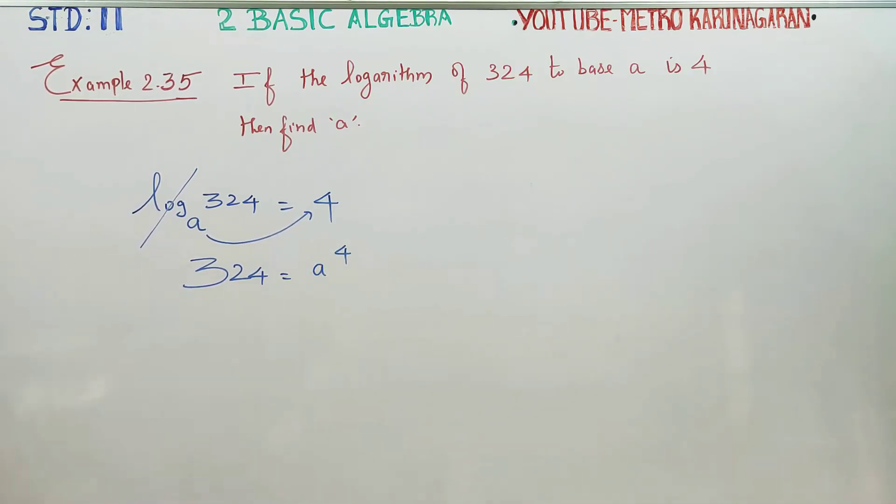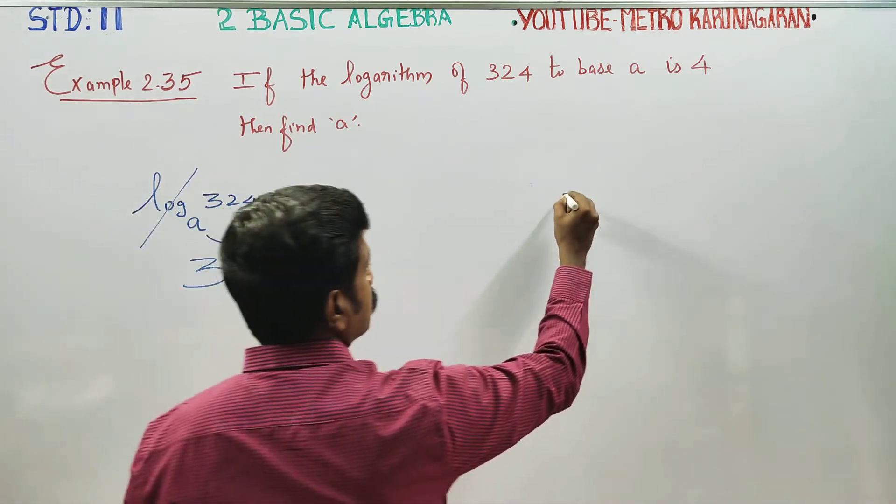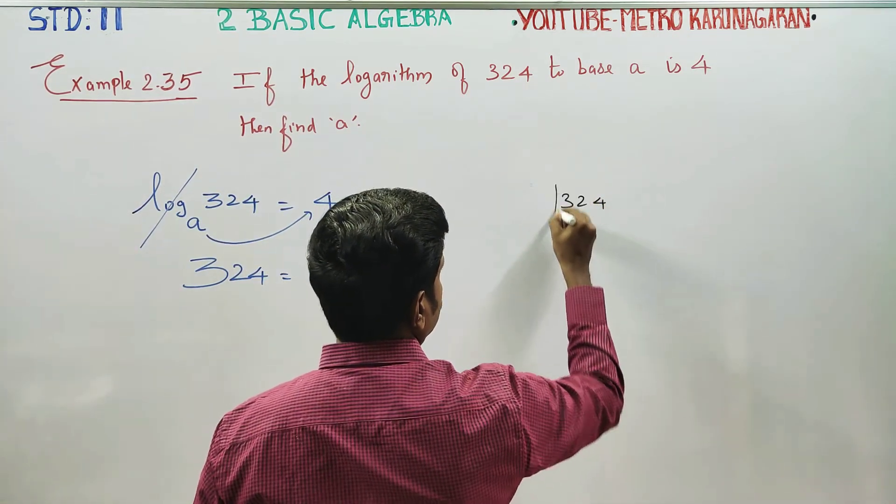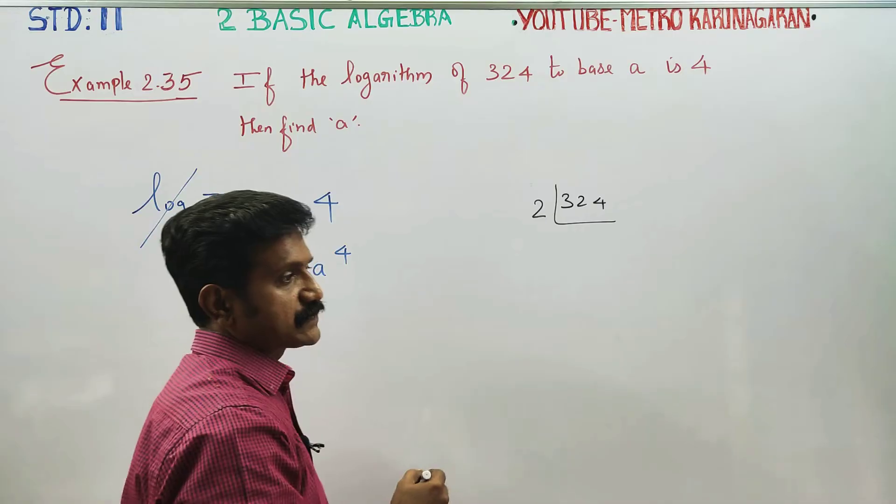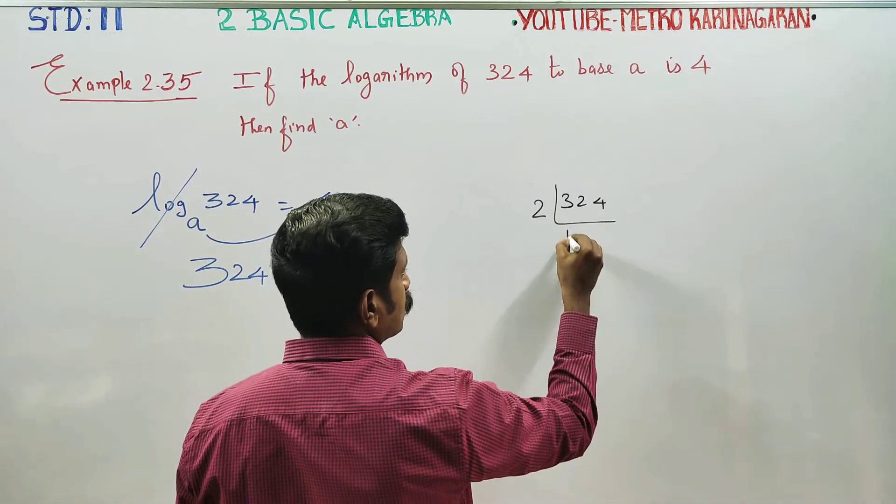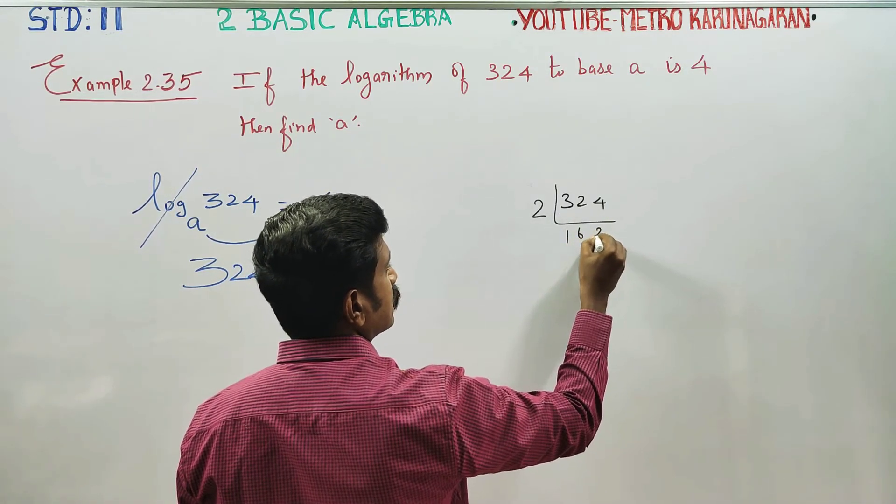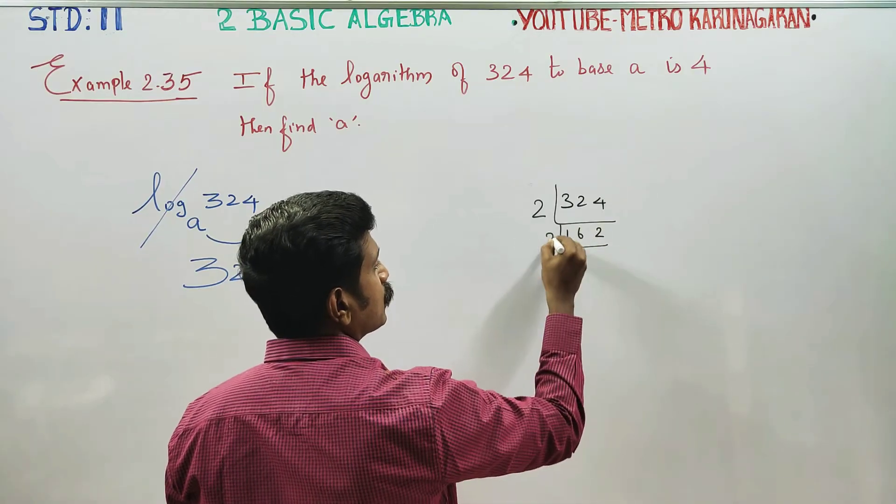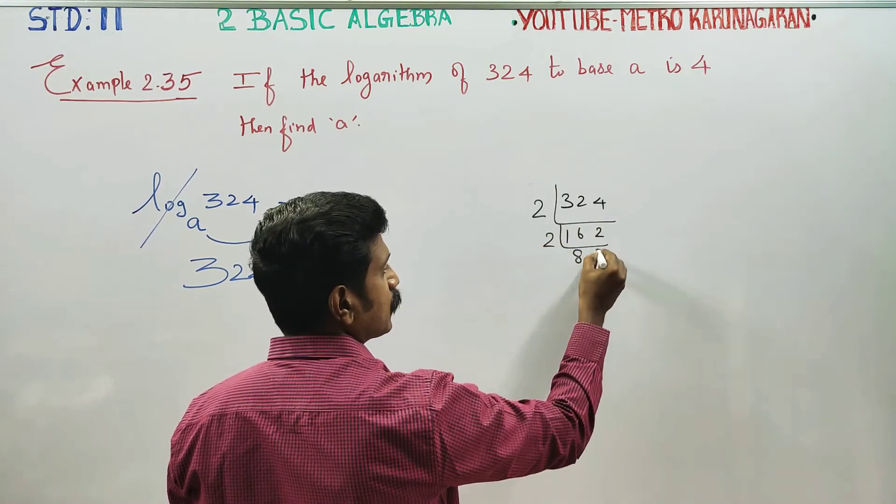Now I will break the result, 324. I am going for 2 tables. 2 tables is break. 162 is 2, 81 is 2. Again, 2 tables is 8, 1.